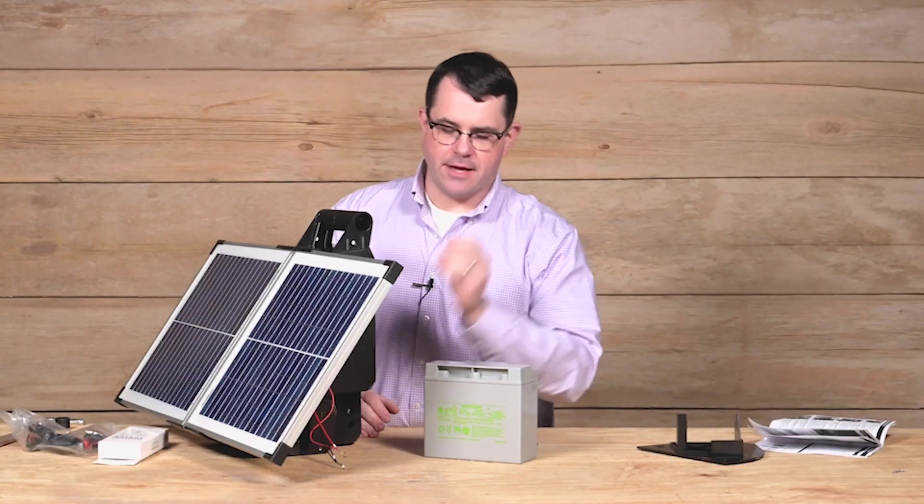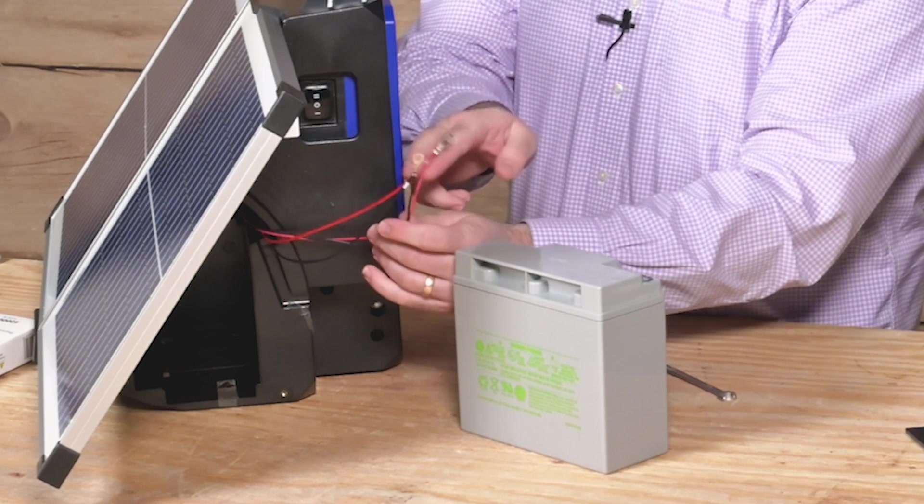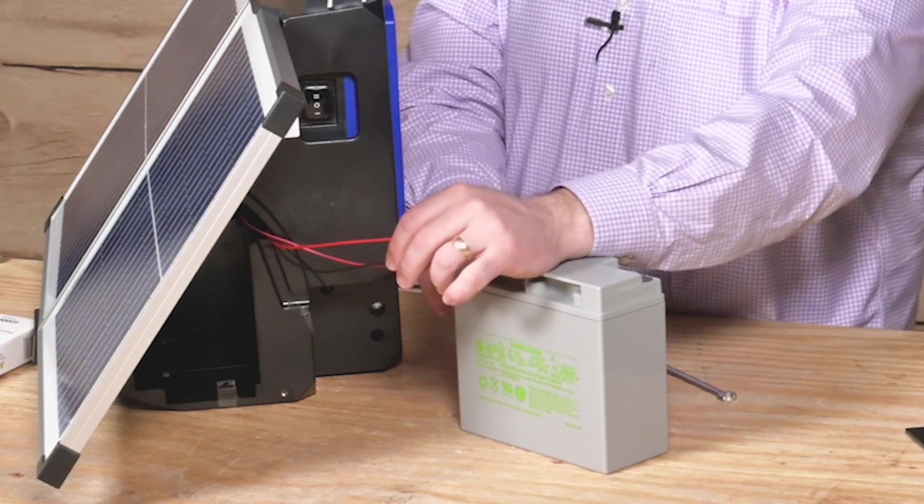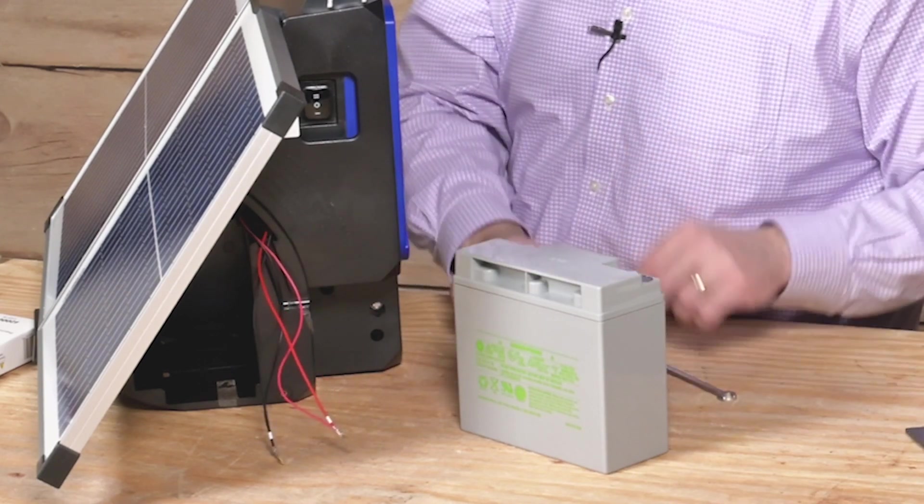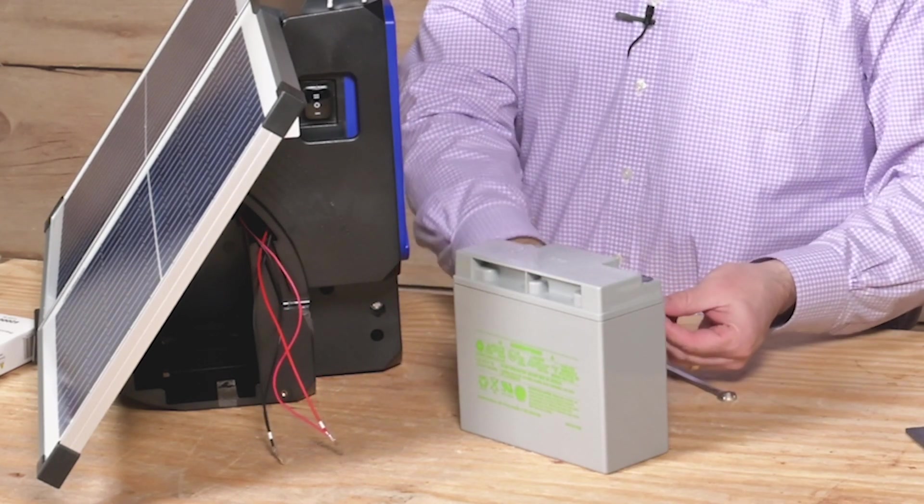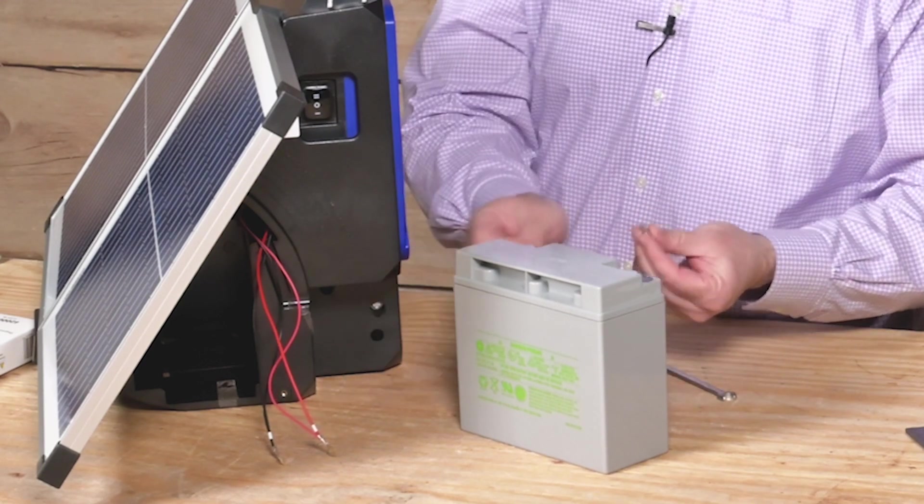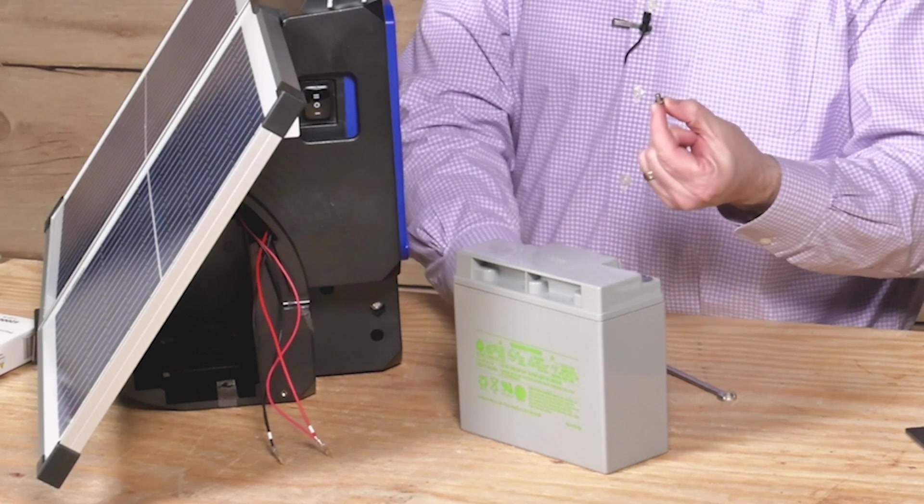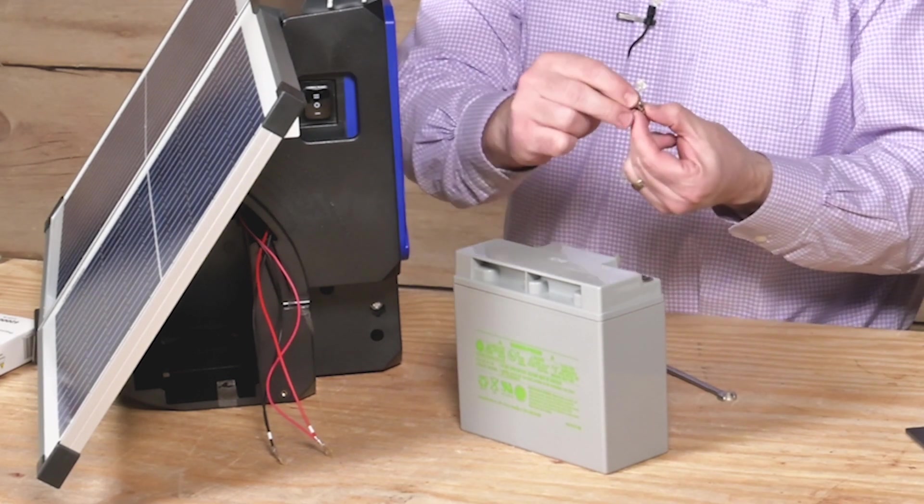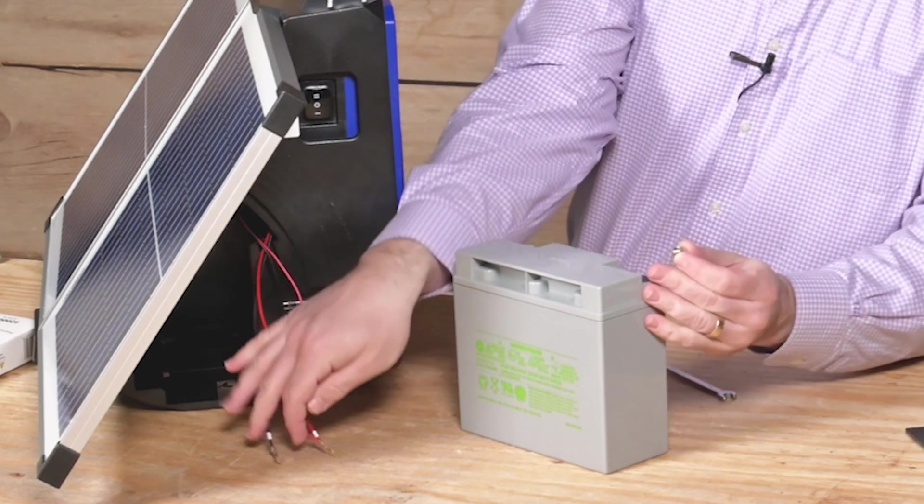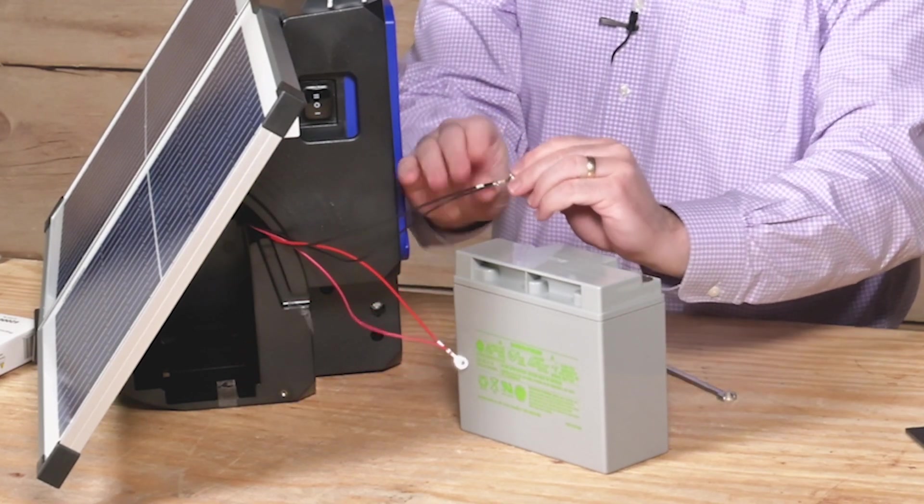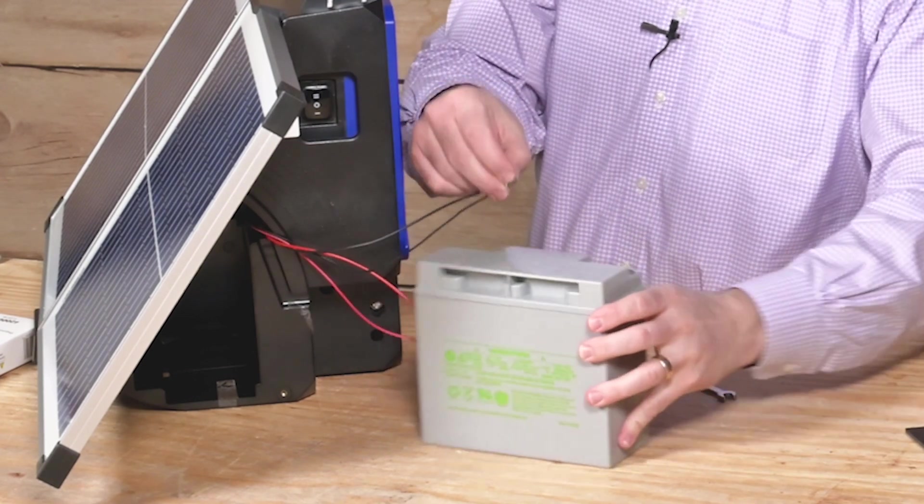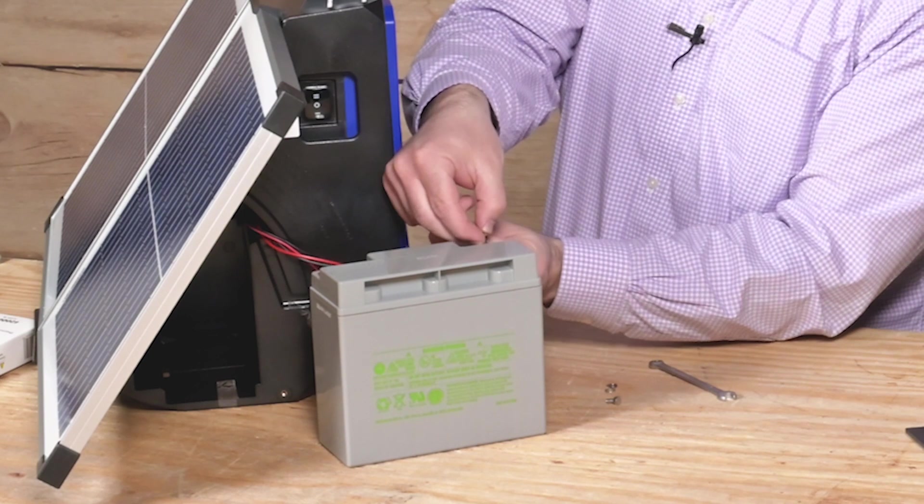We are now ready to install the battery. We have two leads. A red positive lead and a black negative lead. They are color coded to the battery. So red to red, black to black. To put on our terminal ring, we take one of the supplied bolts, lock washer, standard washer, terminal lead, one more washer. Partially thread that in place.